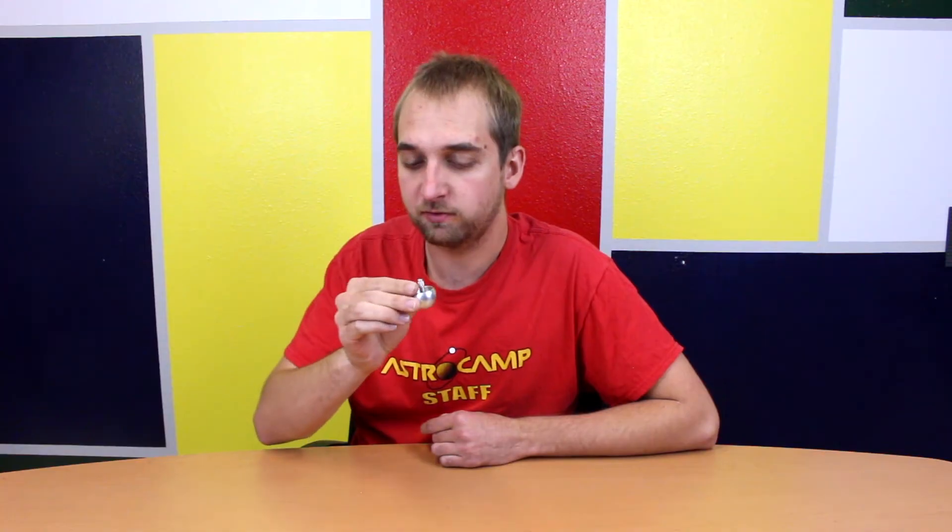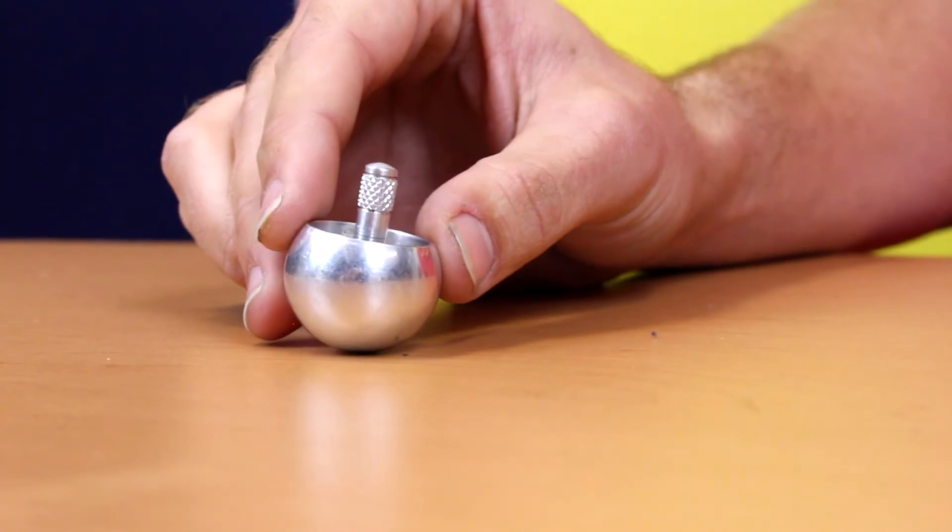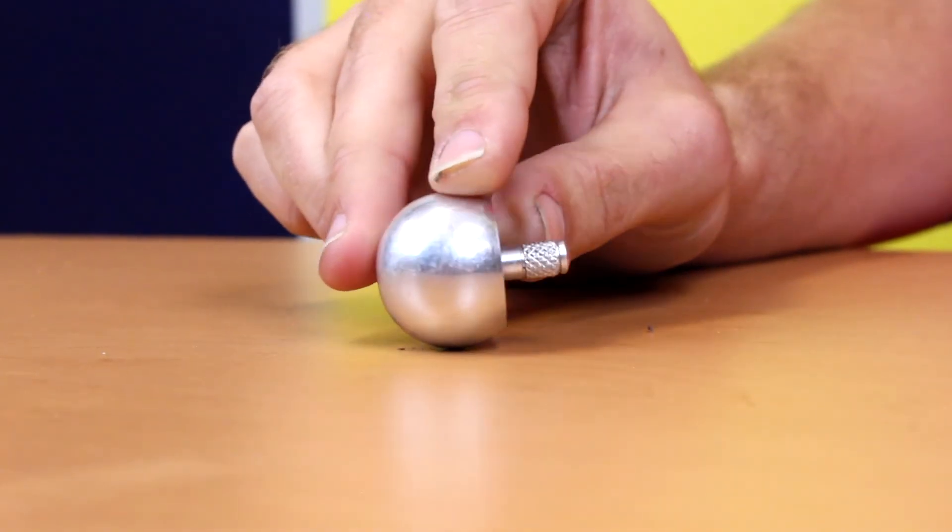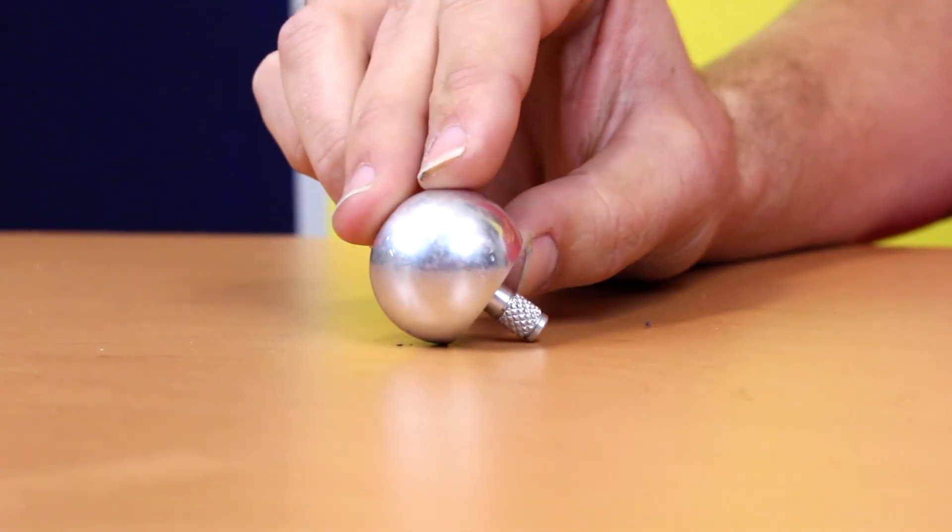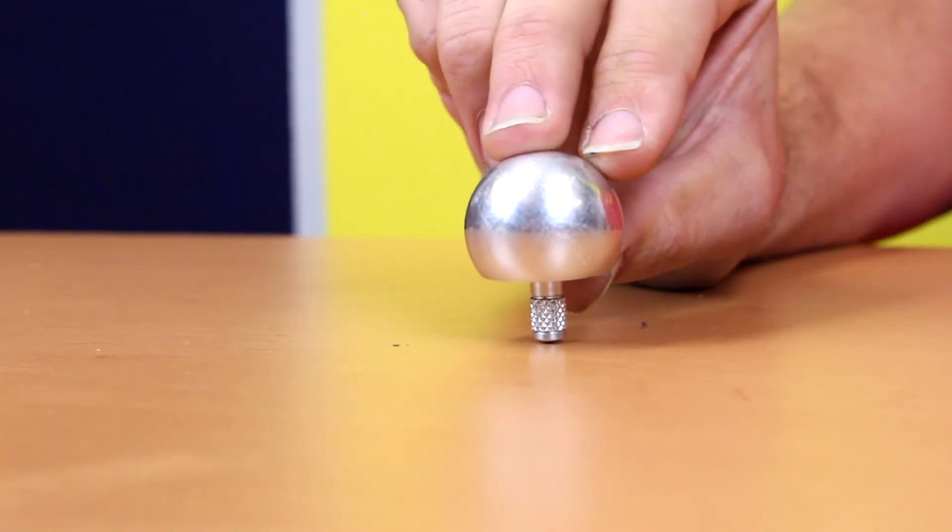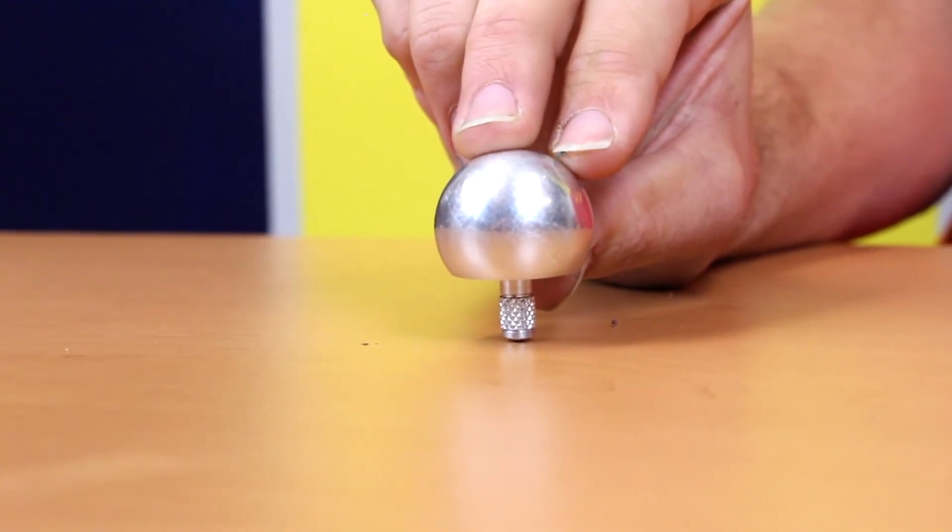As it goes in that circle, that friction with the table will exert a torque on the tippy top and slowly rotate it until the stem touches the table. And then the friction from the stem will exert a final torque to flip the tippy top upside down.